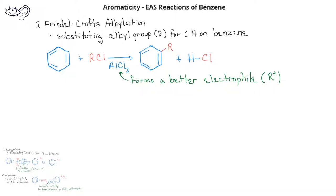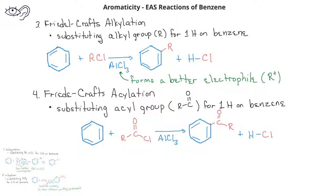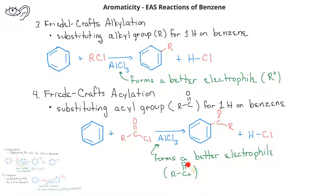Friedel-Crafts acylation is a very similar reaction. It also uses AlCl3, but in this case, instead of an alkyl group, we're adding what's known as an acyl group. It has a carbon double bonded to an oxygen, and then that carbon has an R group attached to it. Initially, there's a chlorine attached to the carbonyl carbon as well. The AlCl3 again helps form a carbocation — except this time the carbocation is a carbon that is double bonded to the oxygen — and it is this compound which is the electrophile that's added to the benzene ring.